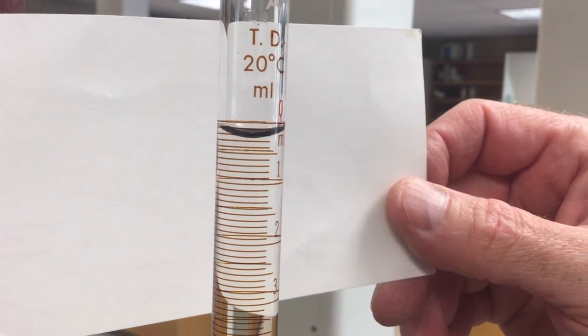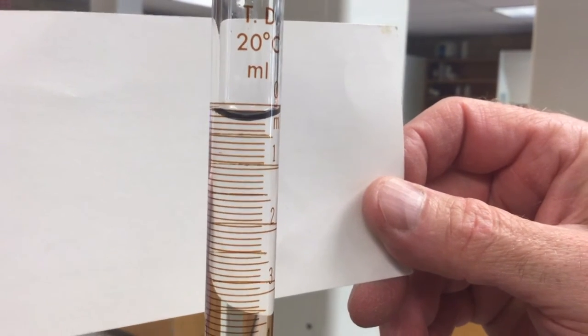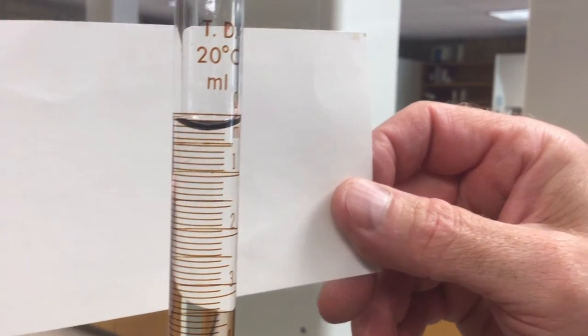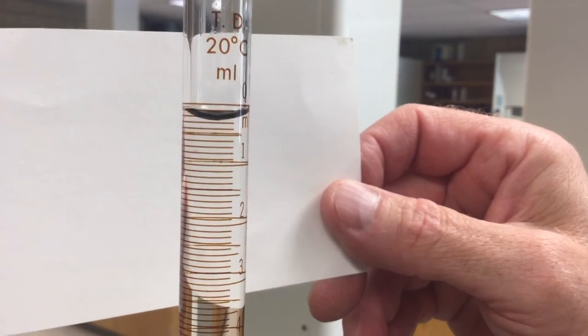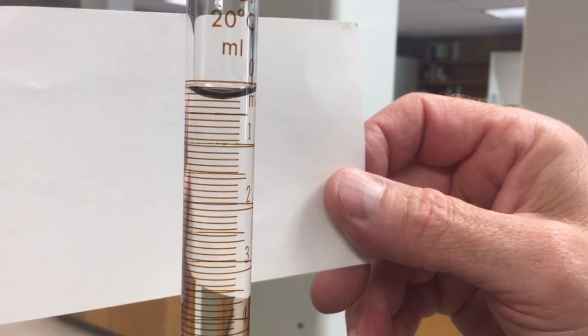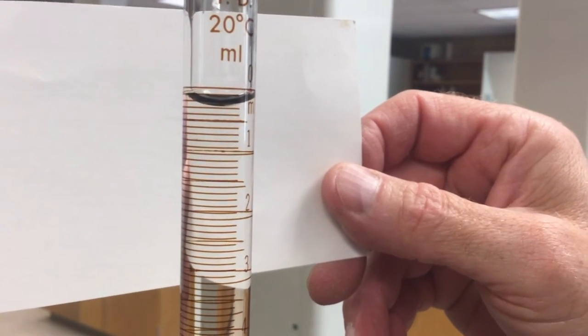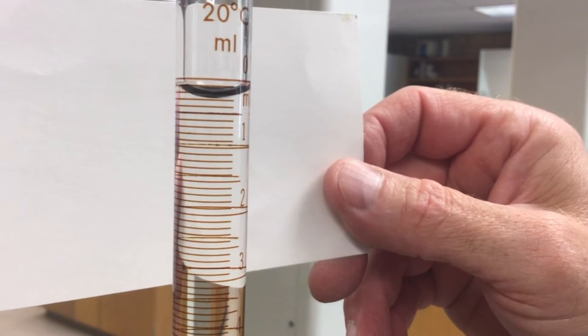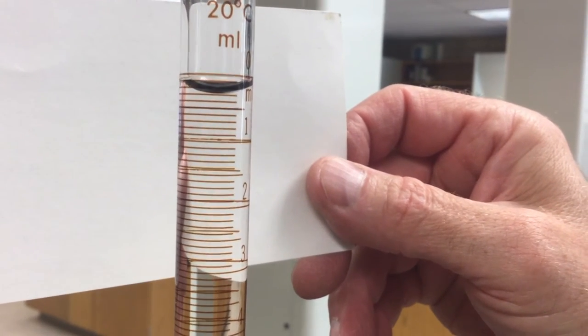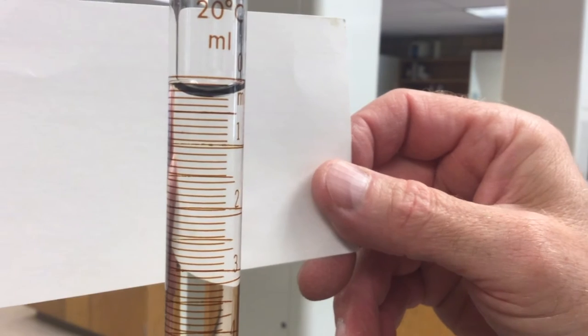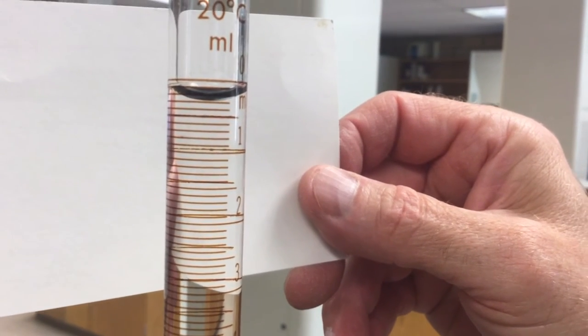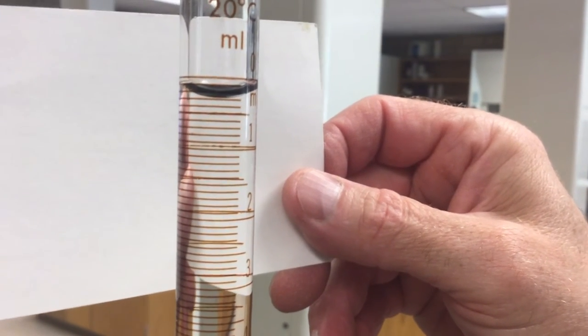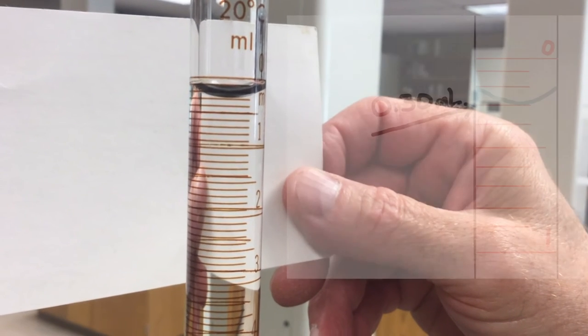When using a burette, you want to measure the volume from the top down. Notice that 0 is at the top, 1, 2, and 3 are below it, so we're measuring marks from above. When we measure, we want to use the bottom of the meniscus. The meniscus is the curved part of the liquid, and we read from that. You'll notice that this particular volume is 0.3 milliliters exactly.